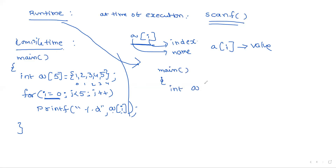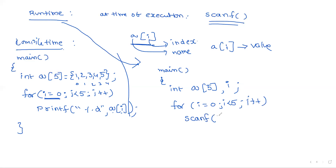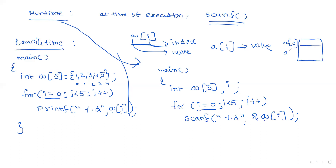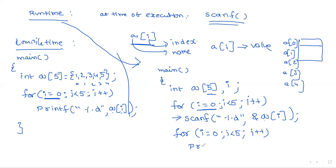For runtime initialization, declare int a[5] and a variable i. Without assigning values at declaration, use a loop: for(i = 0; i < 5; i++) scanf("%d", &a[i]). This reads five values from the user — &a[0] for the first, &a[1] for the second, up to &a[4]. To print the values, use printf("%d", a[i]) inside a similar loop.